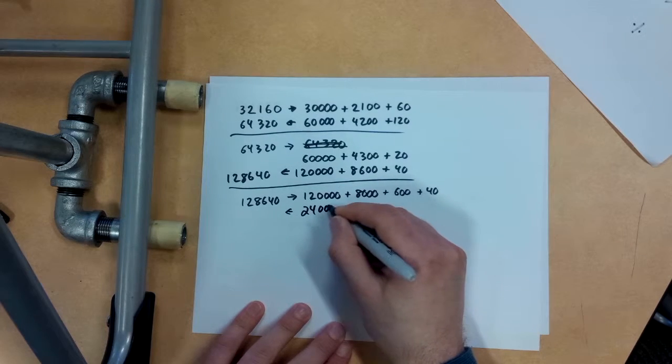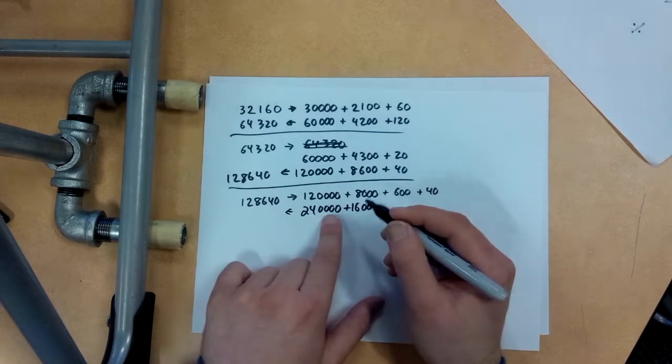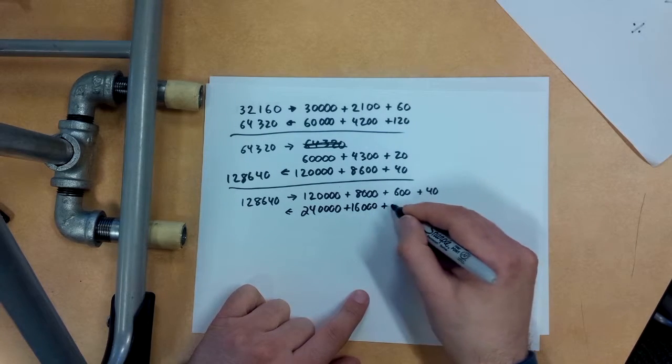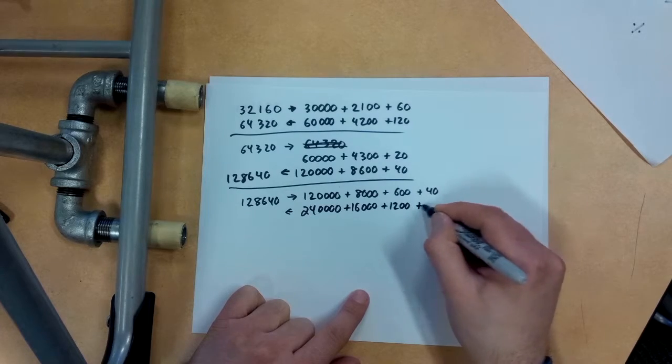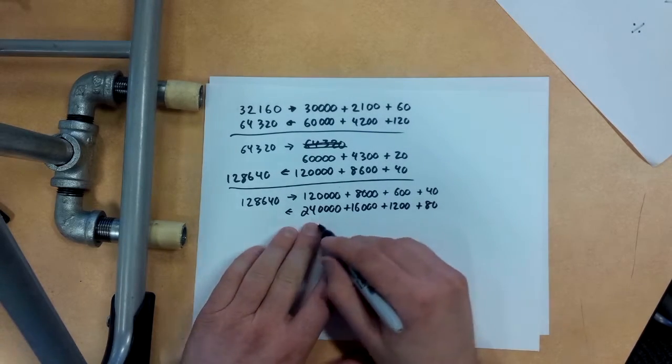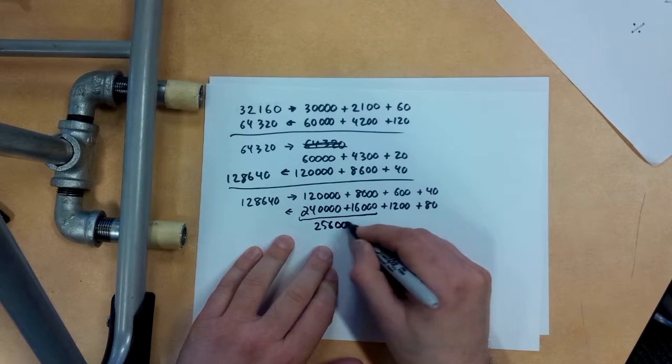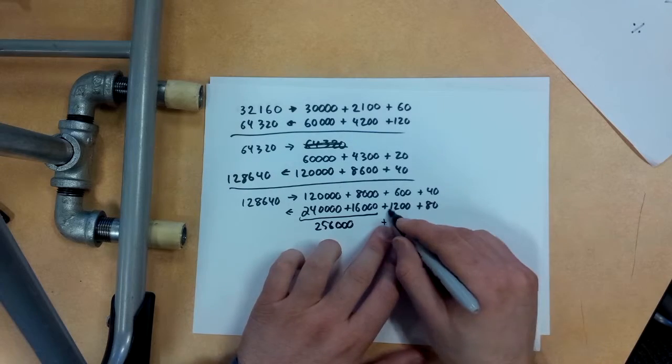So simple numbers. I can double this off by heart, 240,000. This is 16,000, and double this off by heart, that's 1,200, and double this off by heart, that's 80. So putting those together here, this is going to be 256,000 and this is 1,280.